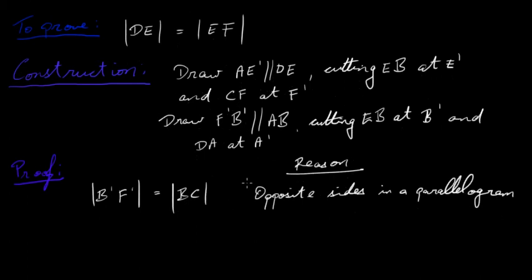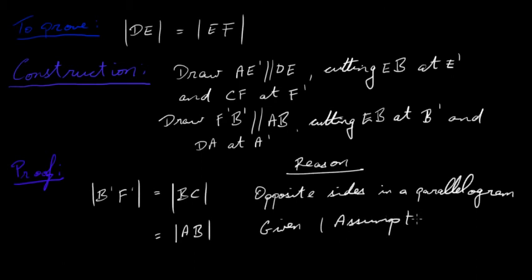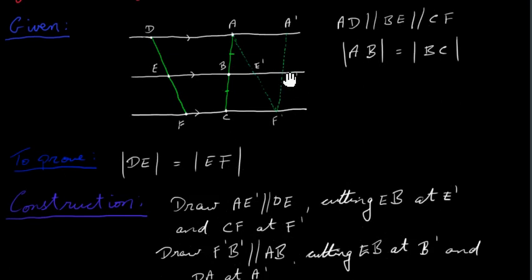Second step: B'F' must also be equal to AB — given, or by assumption. So we've said this side is equal to BC, and since BC equals AB, this side here is equal to AB as well.